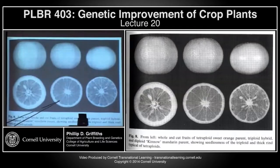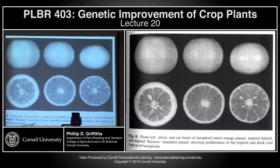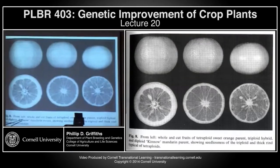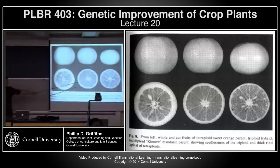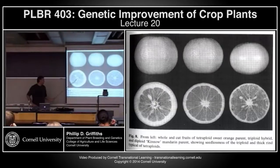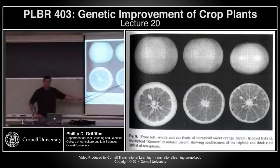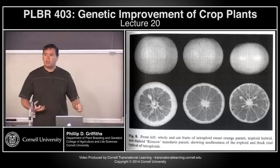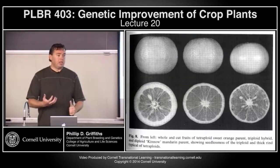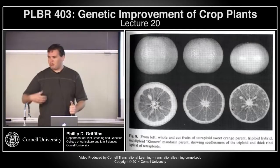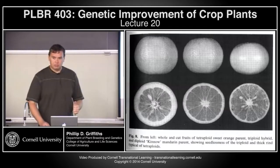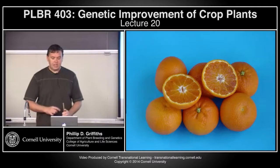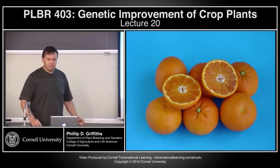By combining the tetraploid with the diploid, it's possible to create an F1 triploid — for example from a diploid mandarin parent crossed to a tetraploid sweet orange, producing the triploid hybrid. As with other fruits, clonal propagation means if you can generate a good seedless orange using this approach, you can just clonally propagate it for production. People typically prefer seedless oranges and satsumas.